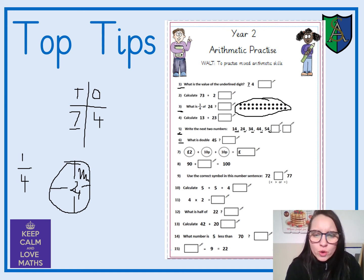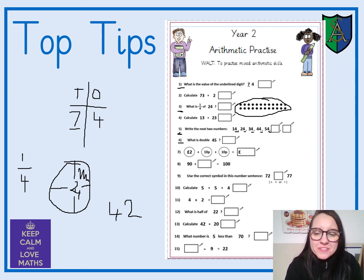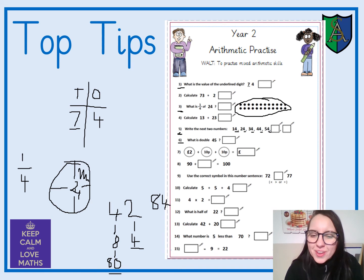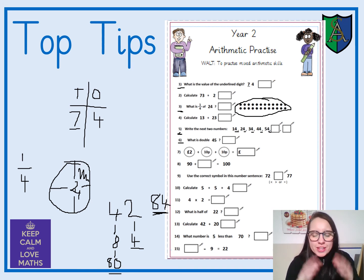Now let's look at double 45. Remember, if we're doubling a two-digit number — I'll do an example with a different number. Say we're doubling 42: we would double the 40 first. If I know double 4 is 8, then I know double 40 is 80, because it's in the tens column. Then if I know double 2 is 4, the answer would be 84. When we're doubling, we just double our tens first and then our ones. That's not the answer to the question, but it's a top tip to help you work out double 45, because that might be very tricky to calculate mentally.